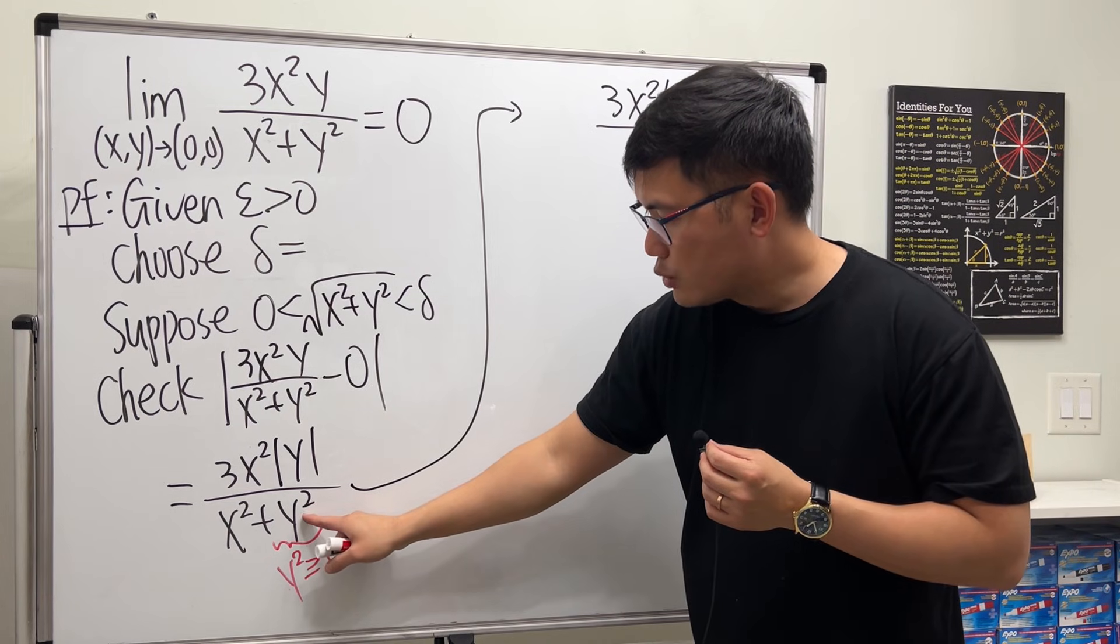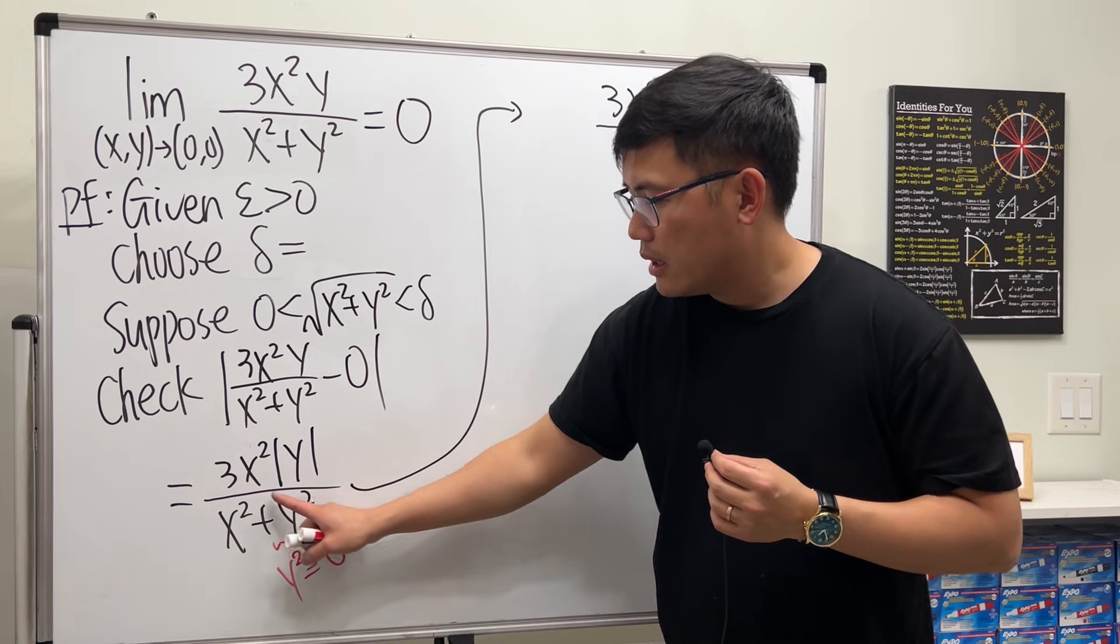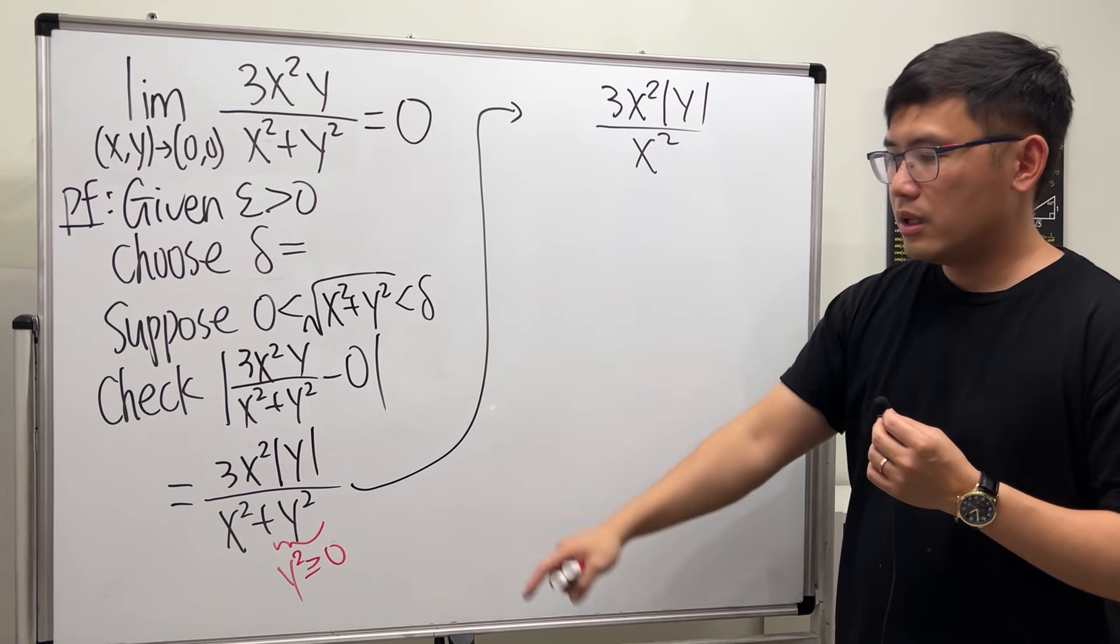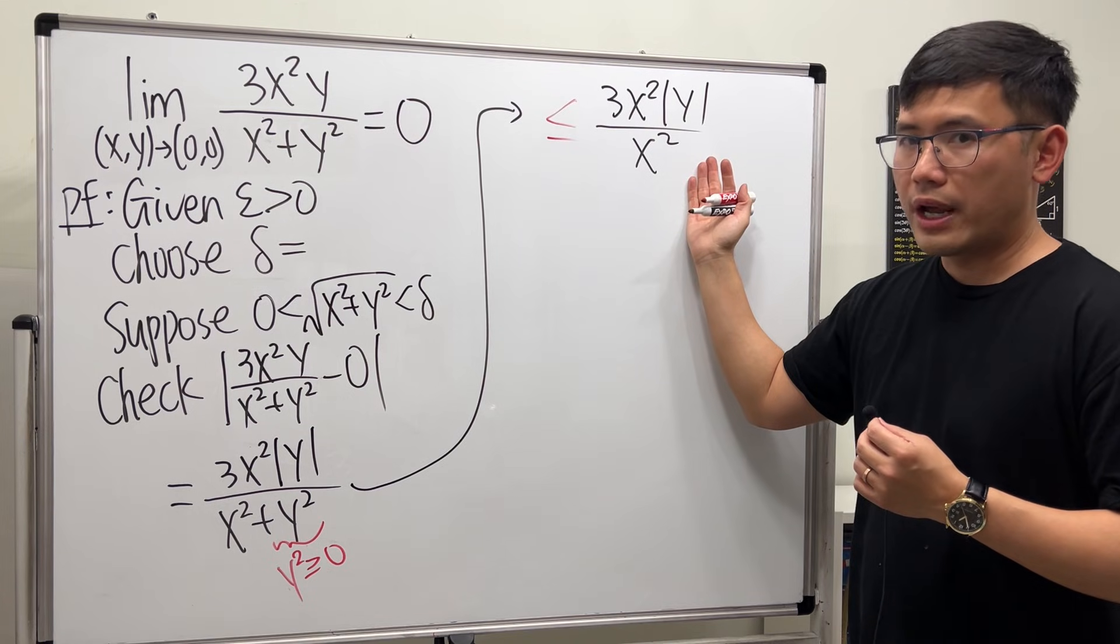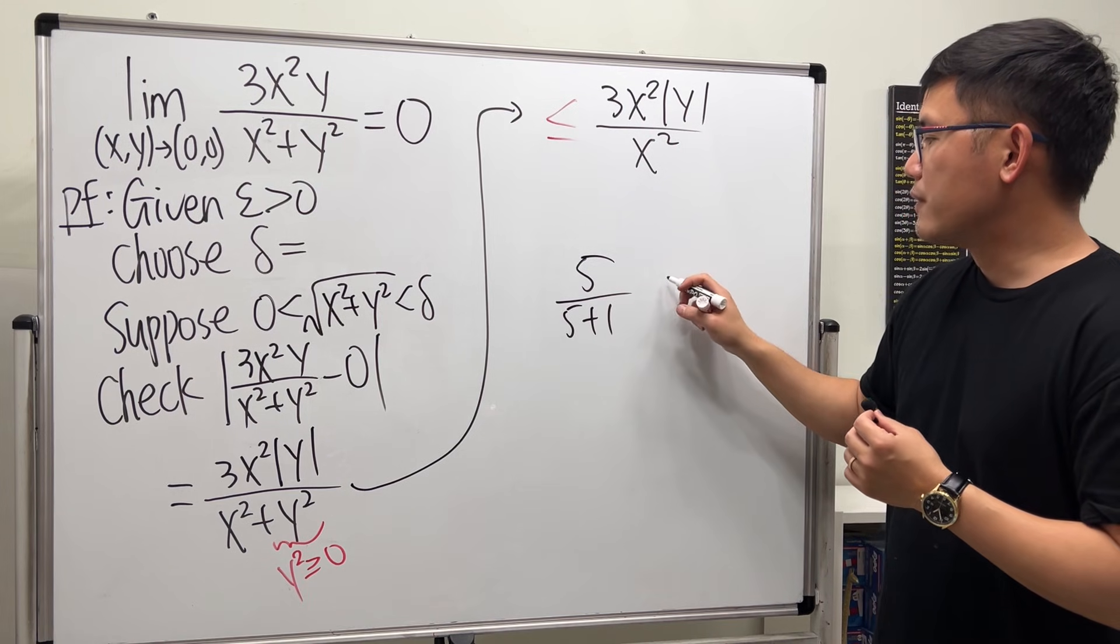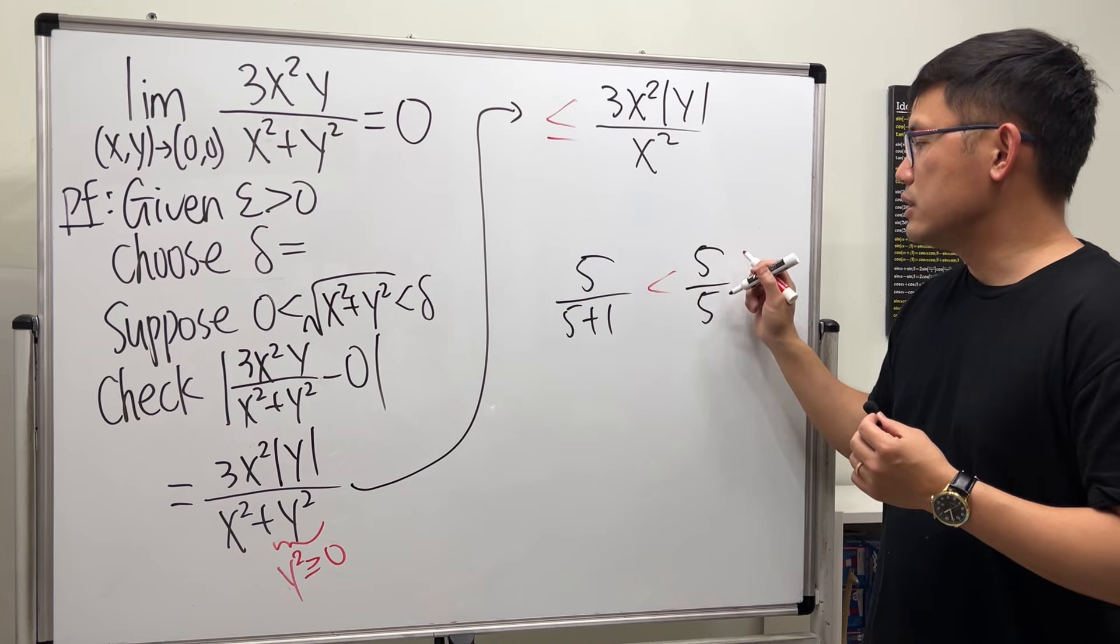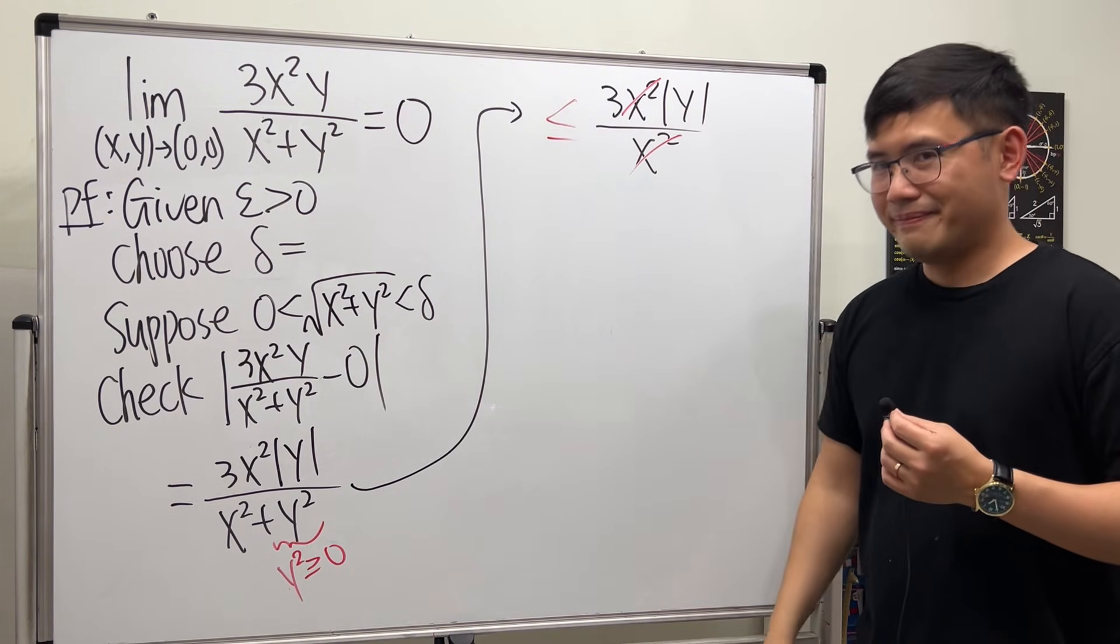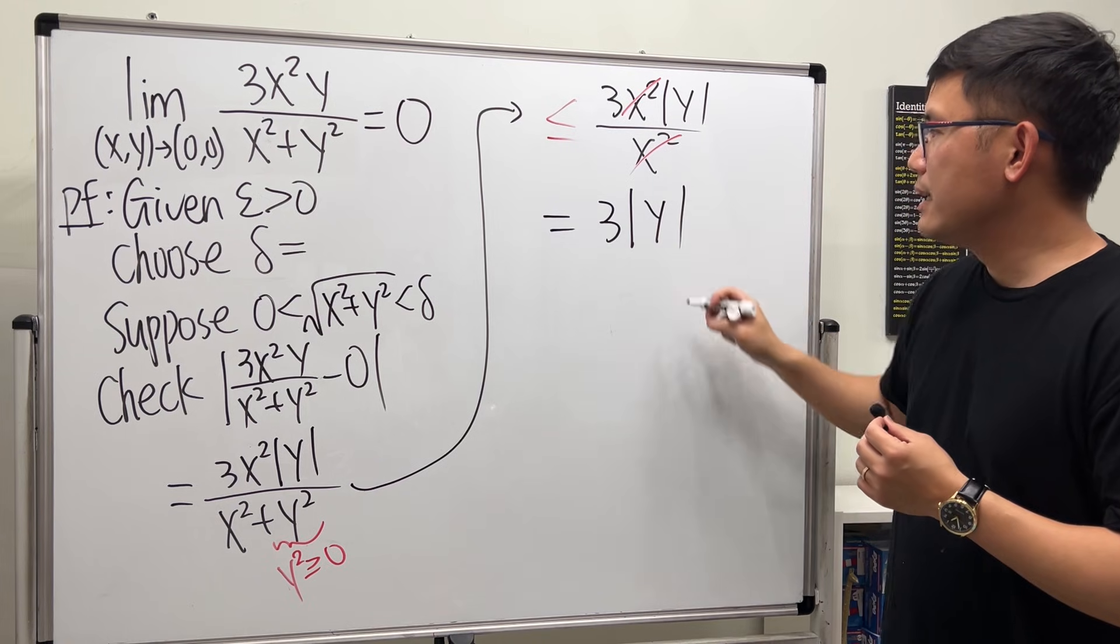And of course, y² is always going to be non-negative. So, if I do get rid of the y², then I will get the following expression, which is 3x²|y|/x². And just get rid of that. But, because this right here is non-negative, so when you're adding it to it, the denominator here, this is bigger than this denominator. And they have the same numerator. So, the whole fraction here will be smaller than this one right here. Cool, huh? It's just that if you have 5 over, let's say, 5+1 versus 5 over 5. Which fraction is bigger? This fraction is bigger. Yeah, same idea. Now, we can legitimately cancel the x². So, this is equal to 3|y|.